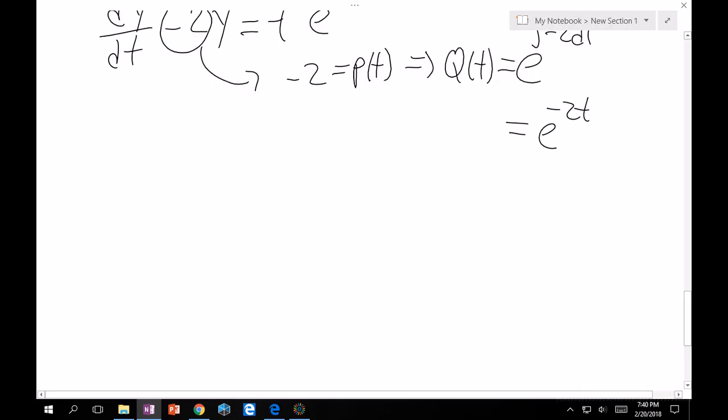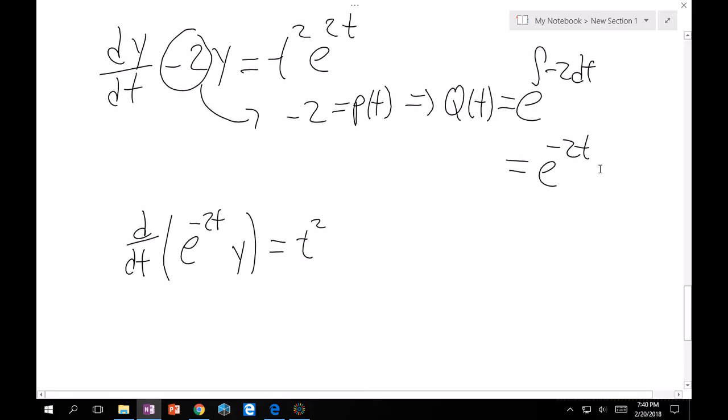So, now that we have our Q(t), let's write this in the way that we can exploit how to get the final answer. d/dt of e to the minus 2t times y is equal to t squared and then since I multiplied both sides by e to the minus 2t, this is going to be e to the 2t times my e to the minus 2t and these two go away. Perfect.